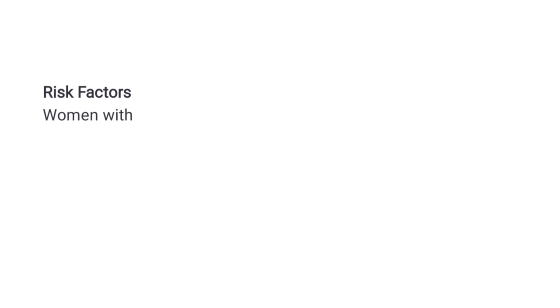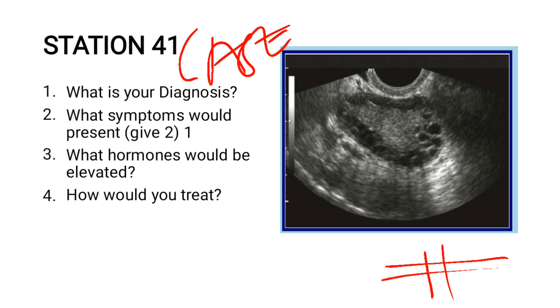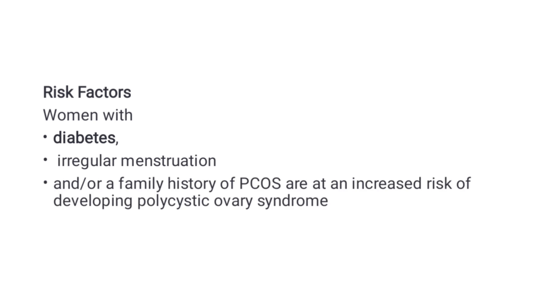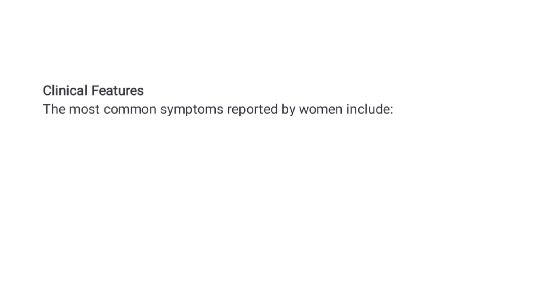Risk factors include women with diabetes, irregular menstruation, and a family history of PCOS, all of which are associated with an increased risk of developing polycystic ovarian syndrome.